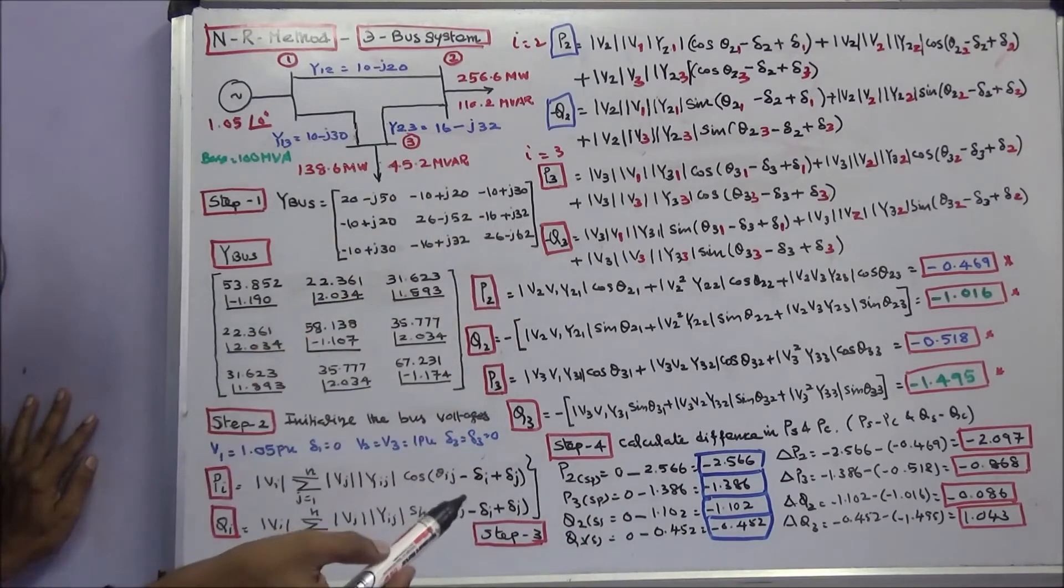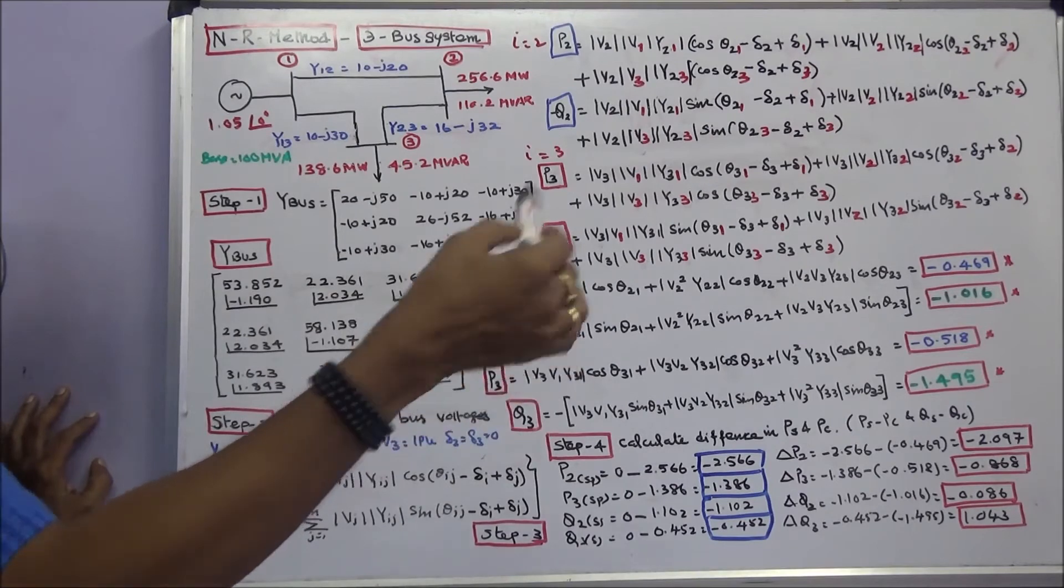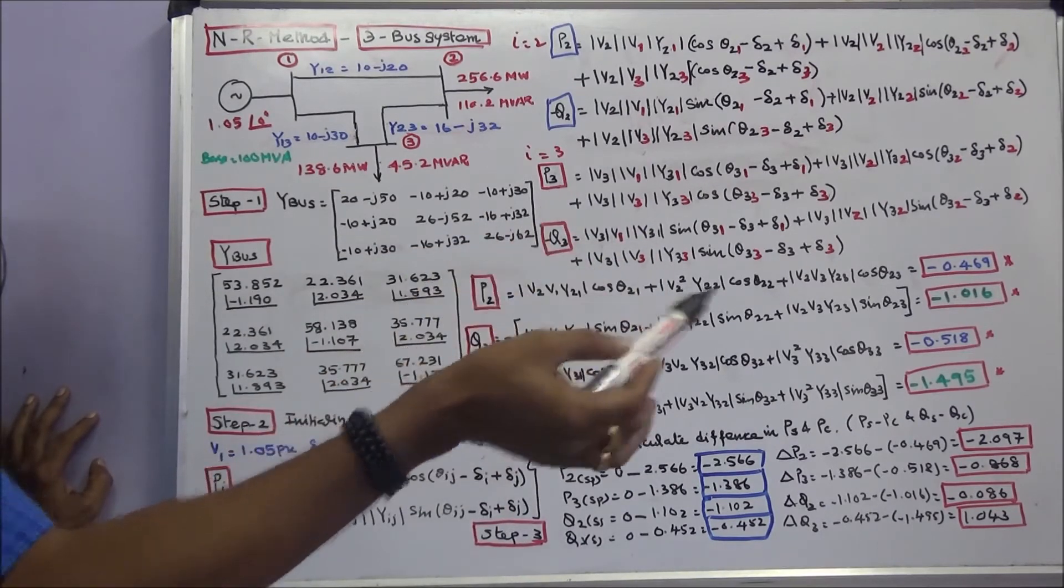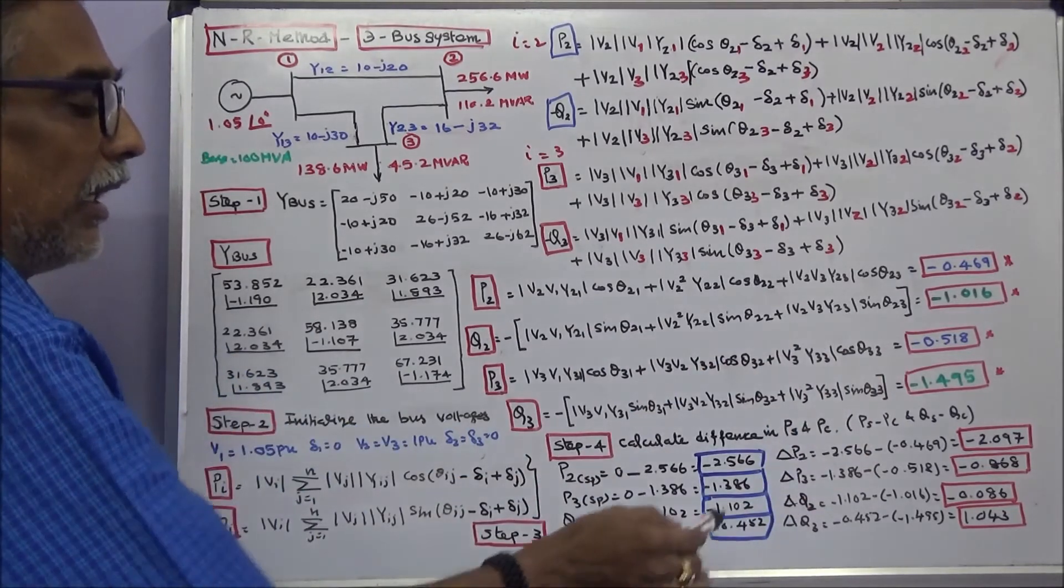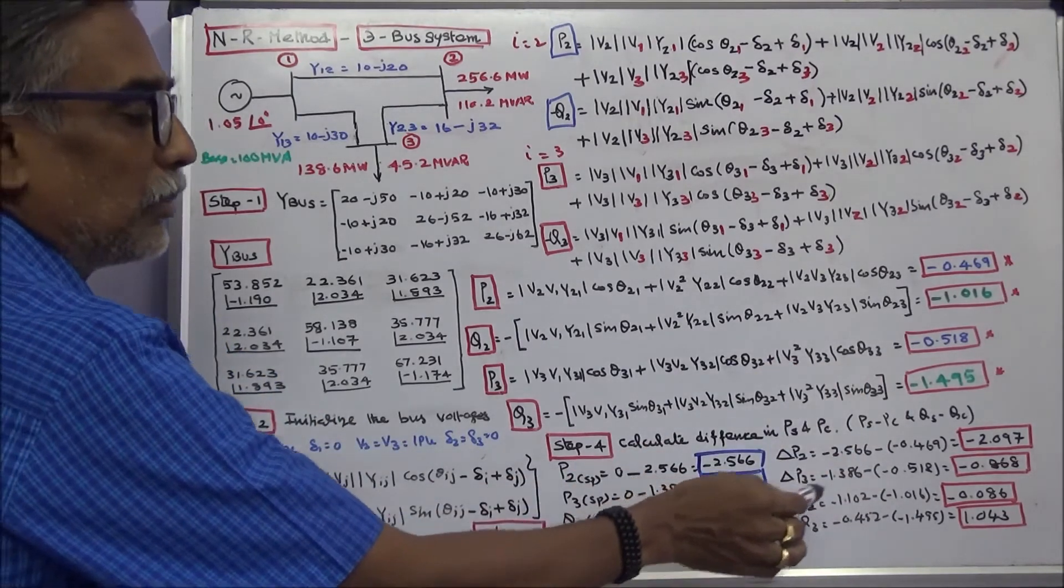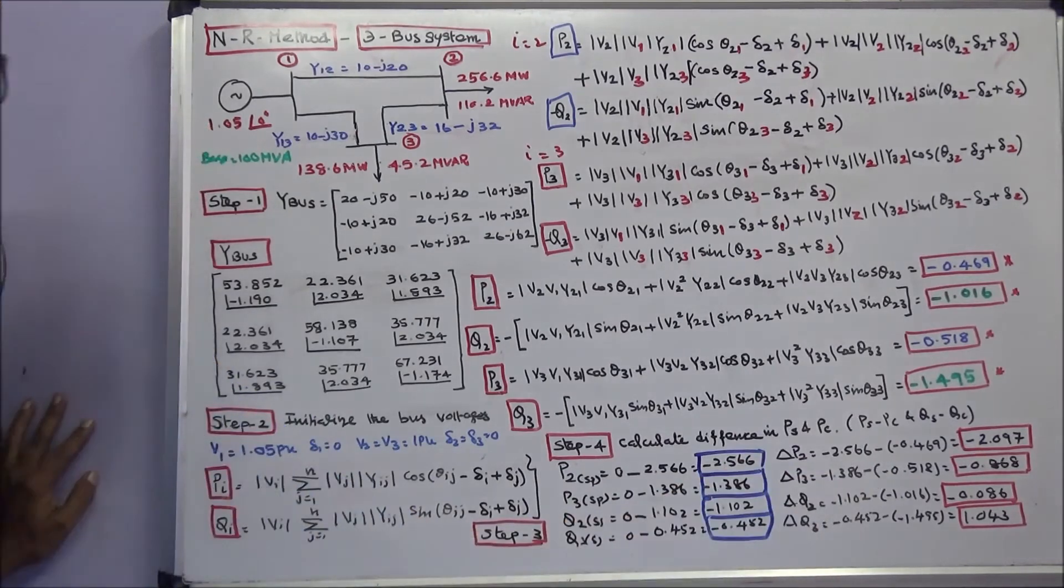Now I can easily find the difference. Del P is equal to specified minus calculated. Del Q is equal to specified minus calculated. Del P2 is equal to minus 2.097, del P3 is minus 0.868, del Q3 is equal to 1.043.